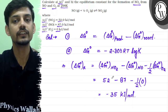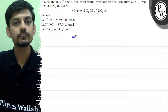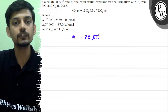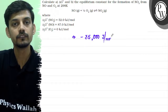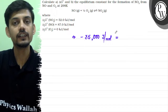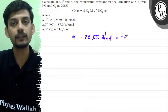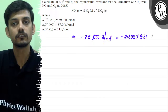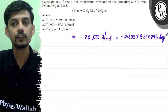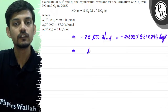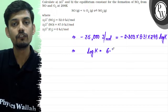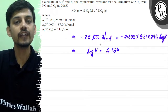Now we use the second relation to calculate the equilibrium constant. ΔG° is −35 kilojoule per mole, or −35,000 joule per mole. So: −35,000 = −2.303 × 8.31 × 298 × log K. Solving, log K equals 6.134.